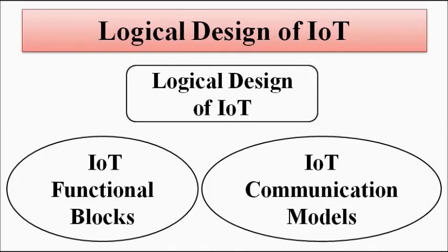The logical design has two parts: the functional blocks and the communication models. The functional blocks define the function of each and every device that is involved — whether it is for sensing, actuation, monitoring, processing, or control — whatever that is defined by the functional blocks.